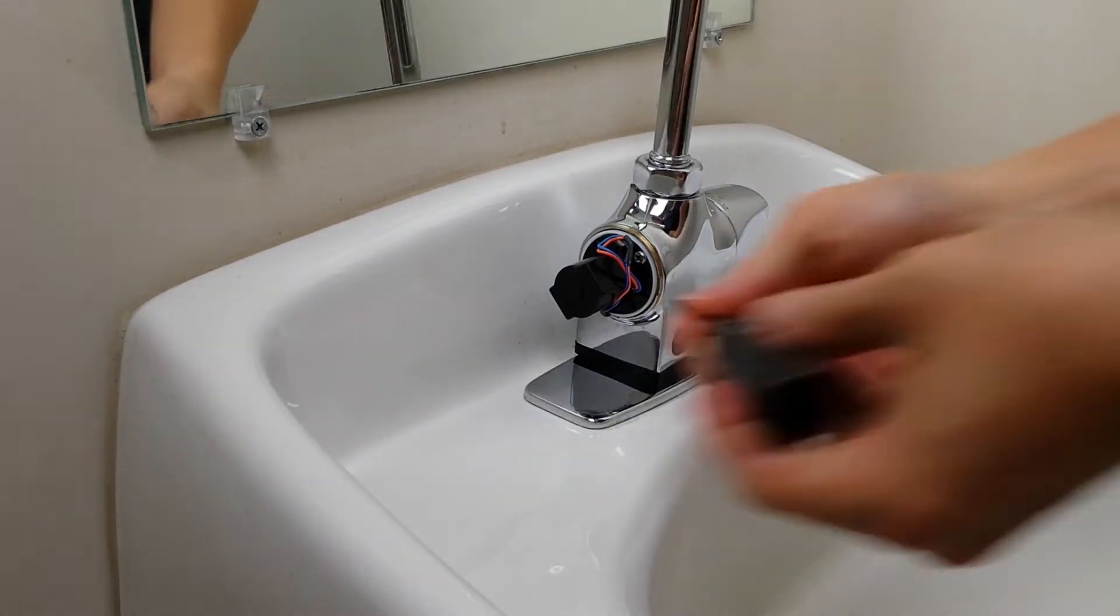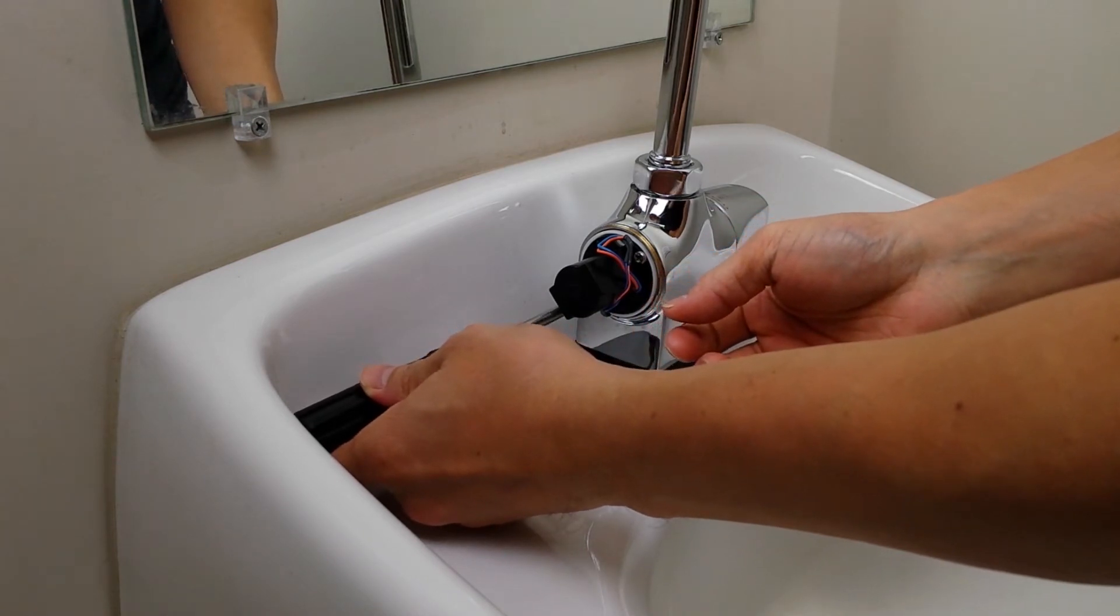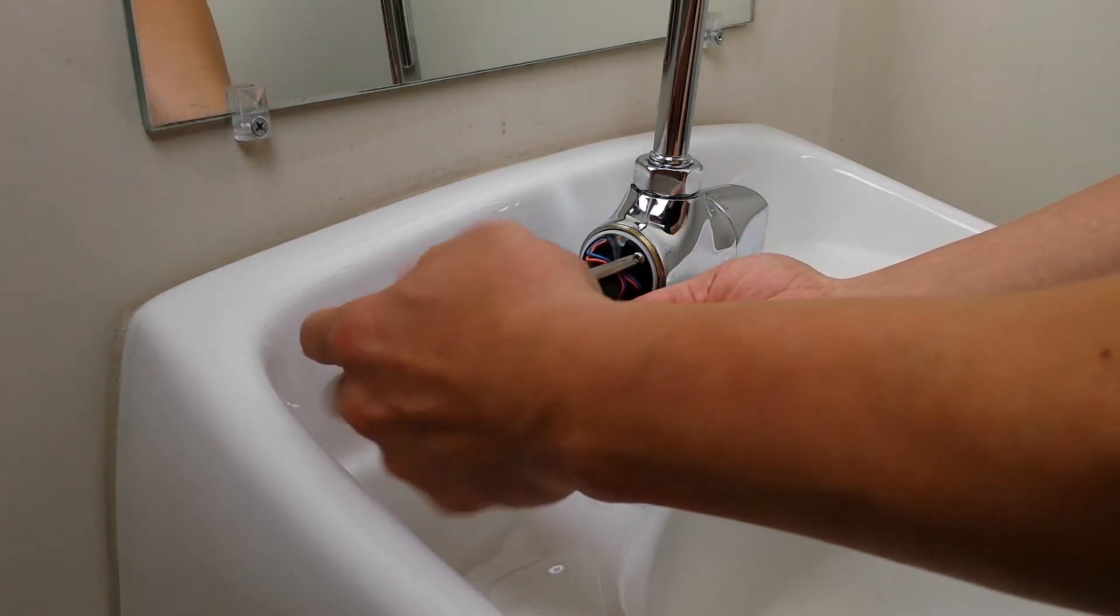Remove the last two screws holding the solenoid coil and gently set the coil down beside the faucet. There may be residual water.